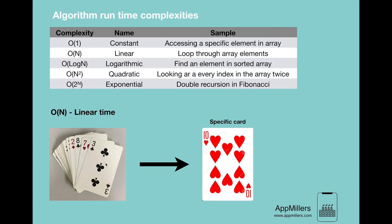Think about a deck filled with hundreds of cards that are not the 10 of hearts. Your search is directly related to how large the deck of cards is. If we have 100 cards we have to look one by one to find the specific card. The more cards we have, the more time it takes to find the 10 of hearts. This is an example of linear time complexity.